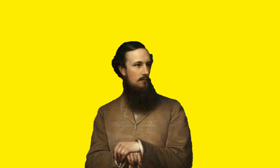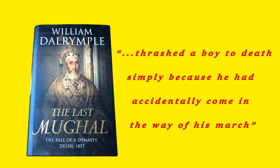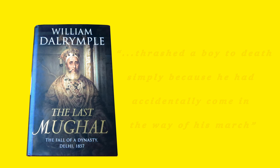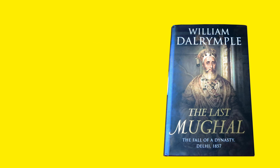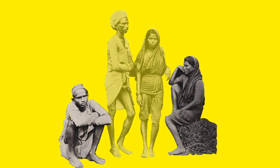Like the company, John Nicholson was also cruel — not just cruel, but inhumane to his bare bone. Detailed instances of his cruelty have been given in British author William Dalrymple's book 'The Last Mughal.' For instance, he thrashed a boy to death simply because he had accidentally come in the way of his march. In another incident, he hanged all the regimental cooks when he found that the food was laced with poison. When asked to eat the food they had prepared, the cooks refused, and immediately he ordered them hanged.